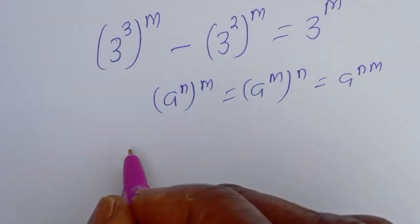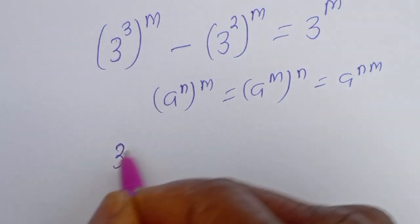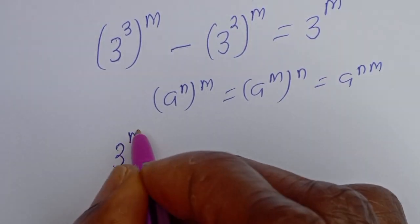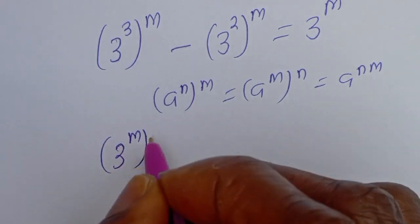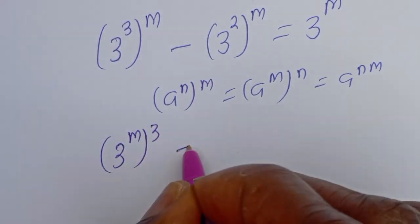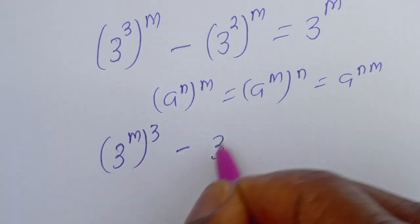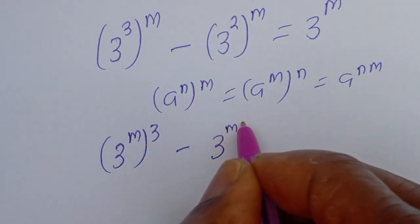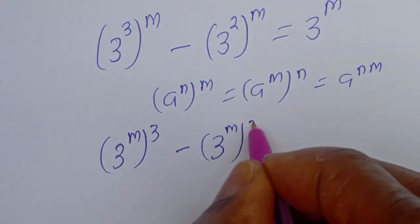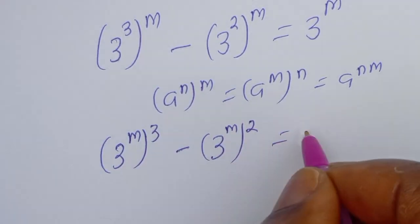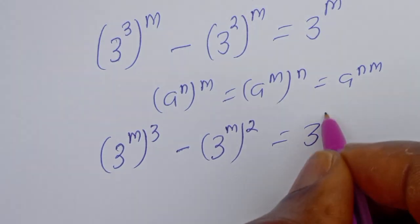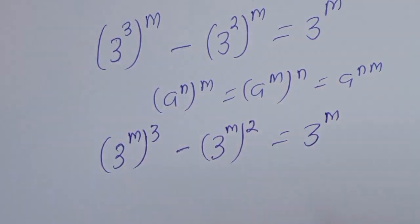Then this can be written as 3 to the power of 3M minus 3 to the power of 2M is equal to 3 to the power of M.